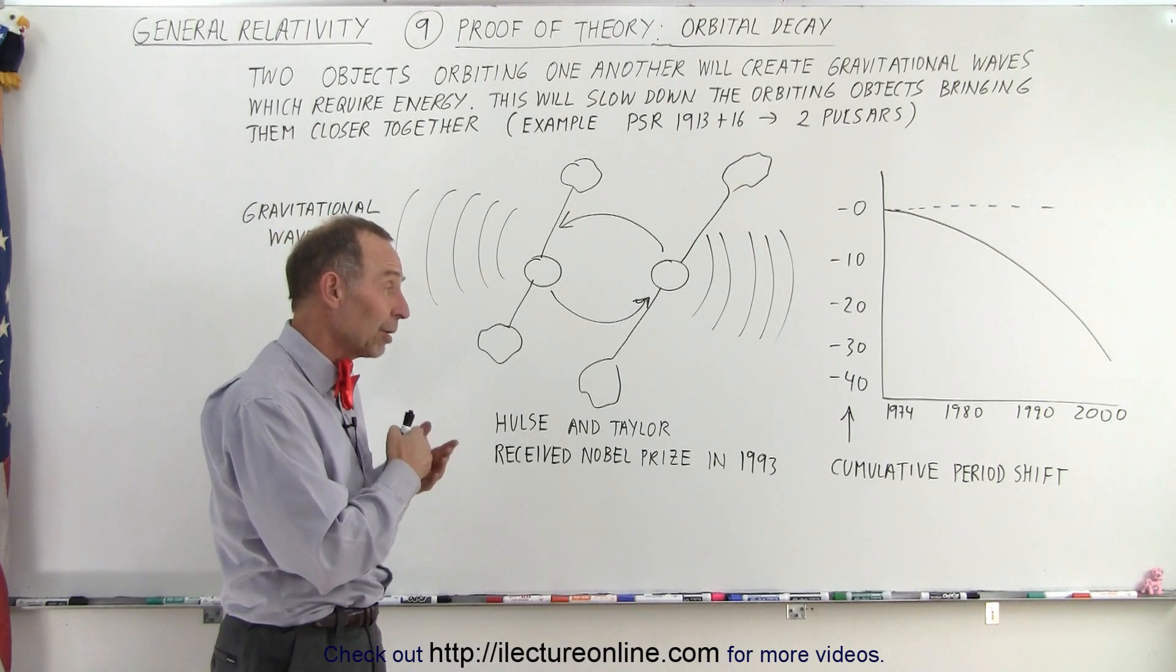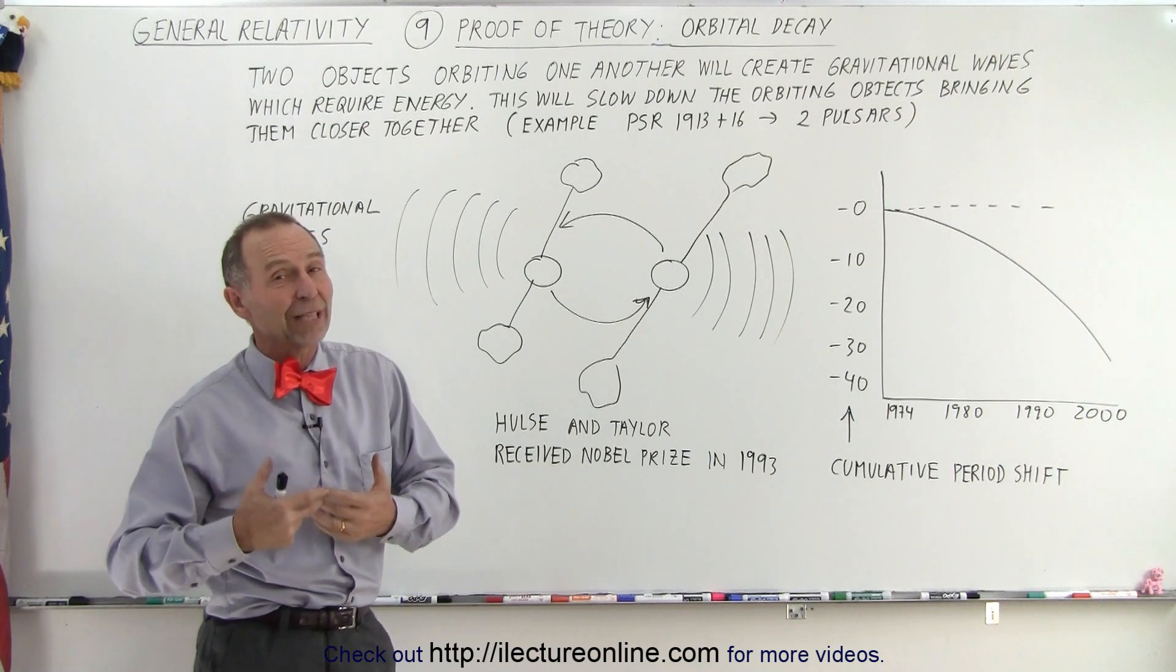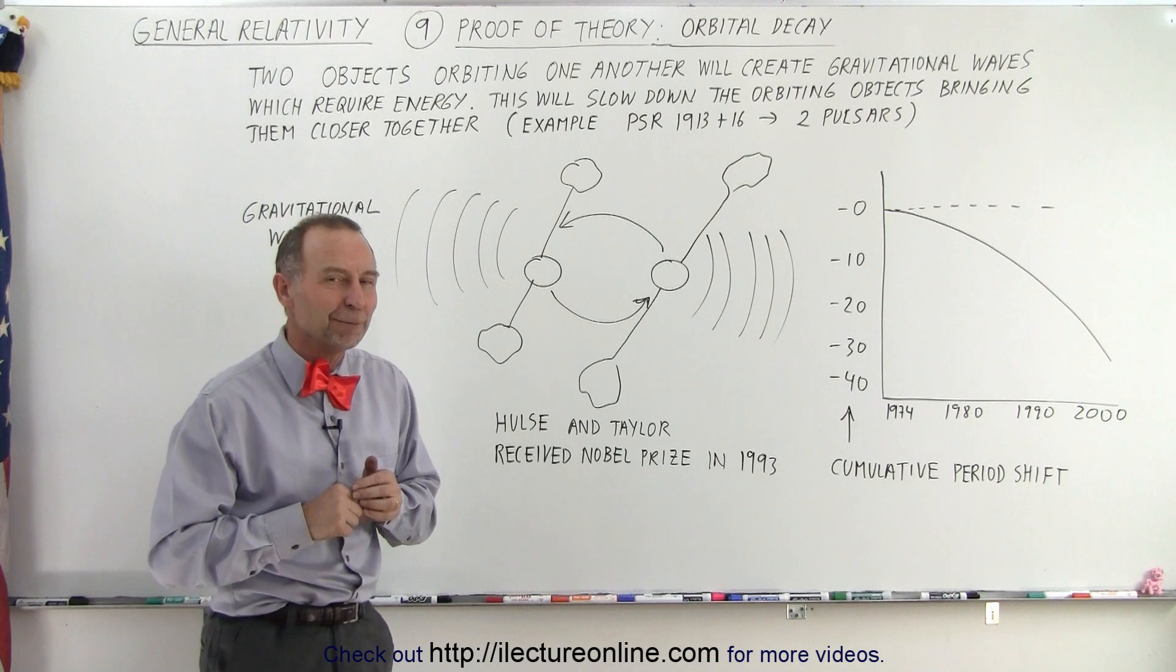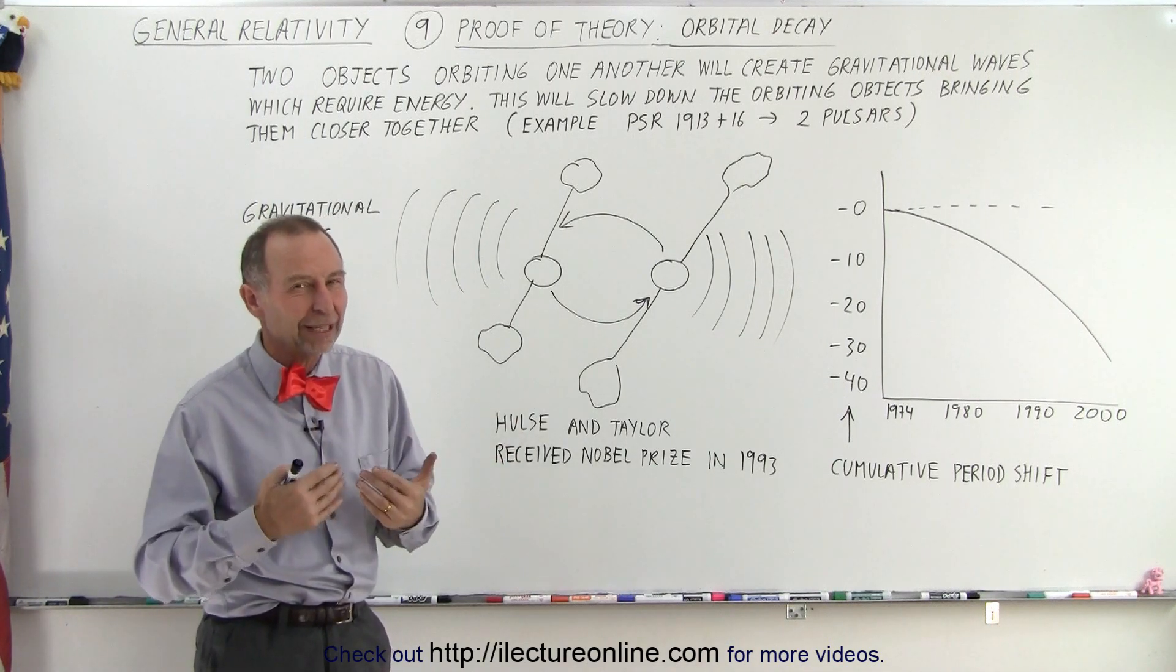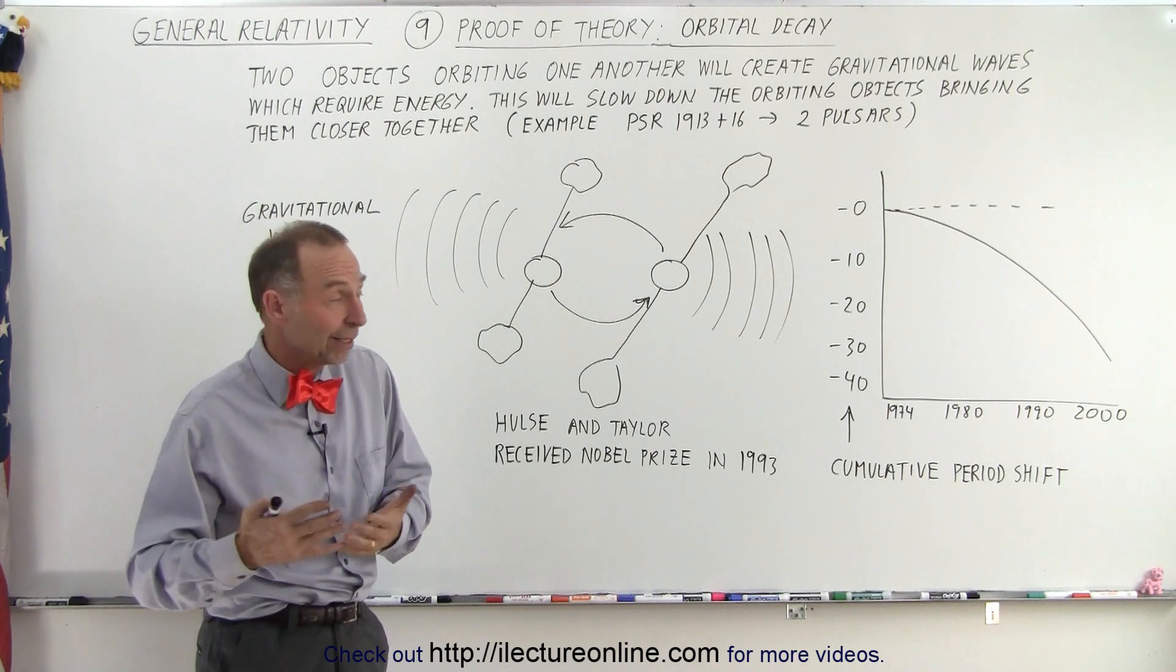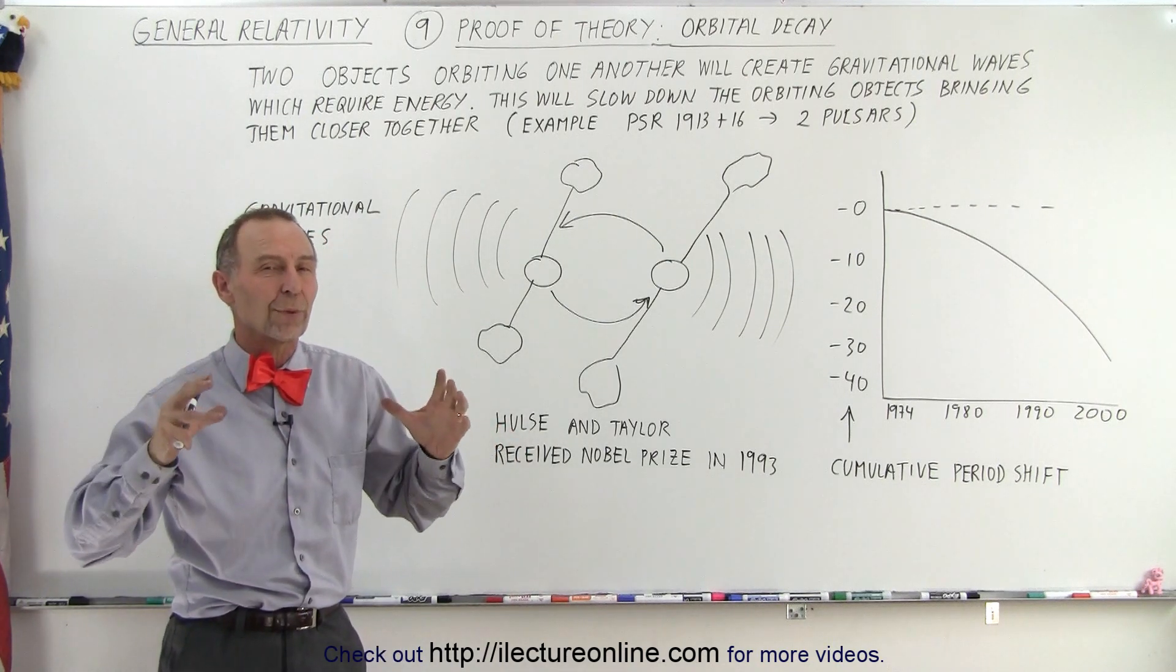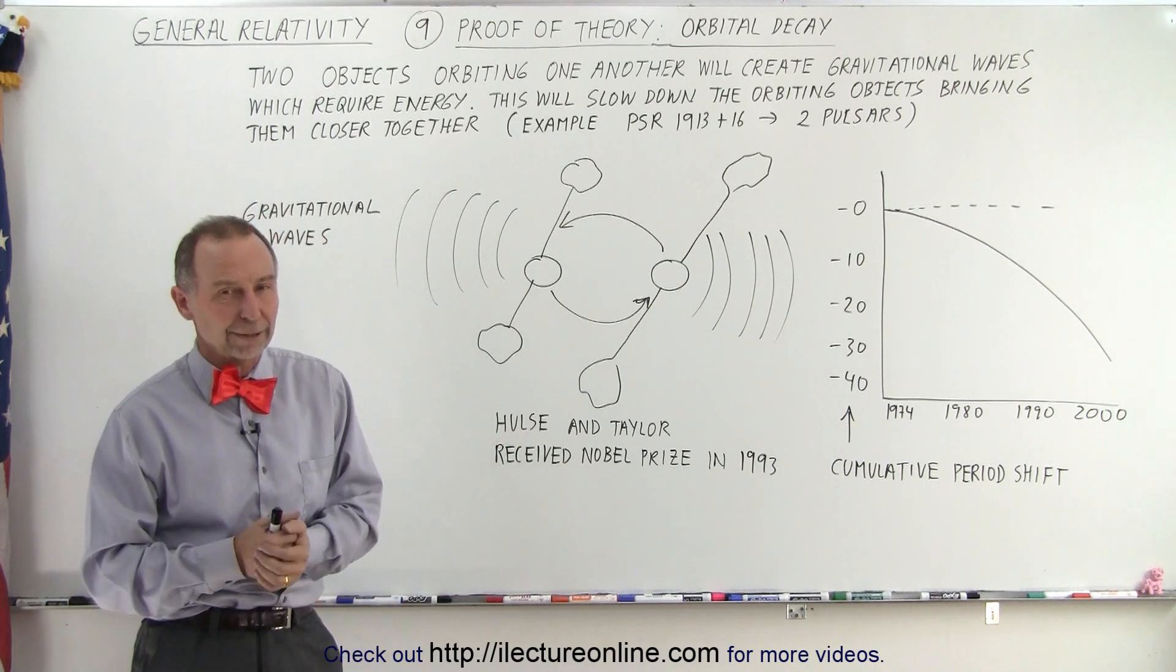And Einstein was, by all means, correct in predicting the gravitational waves, which eventually we were able to actually measure directly, and that we'll show you in another video. So again, it seems to be correct. Everything we're observing seems to imply that the theory of general relativity is absolutely the correct way of describing the universe. Everything we're measuring seems to be a direct result of that theory.